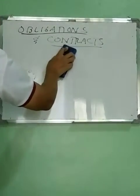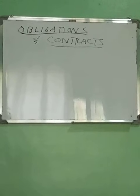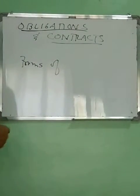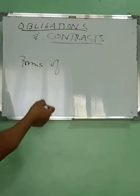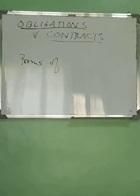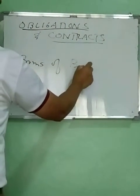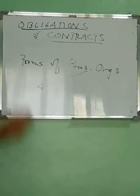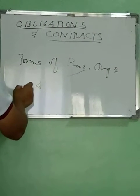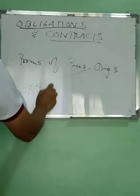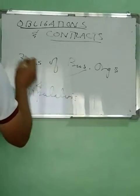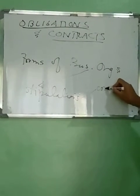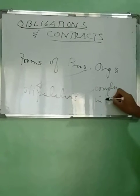Before I proceed with my lecture on obligations and contracts, last time we studied about the different forms of legal or business organization. I told you about sole proprietorship, partnership, and corporations. These business organizations also have the obligation to comply with the stipulations — those terms and conditions that the contracting parties have entered into.